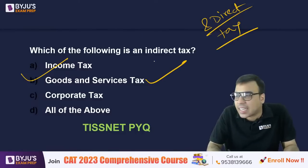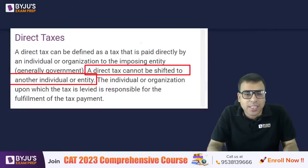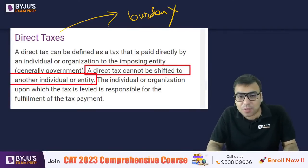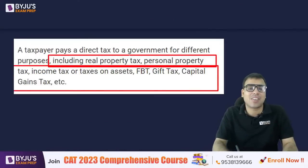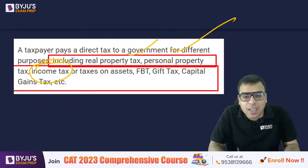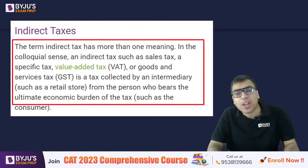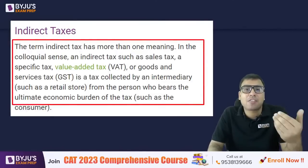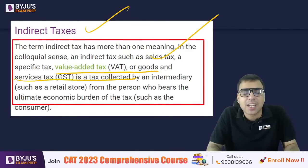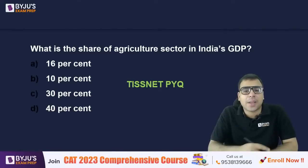Income tax and corporate taxes are direct taxes. Direct tax is the one in which the burden cannot be passed on to others — for example, income tax, property tax, capital gains tax (CGT). Indirect tax means the burden can be transferred to others. For example, when you buy a biscuit, GST is levied from you and the company passes it to the government. VAT and GST are indirect taxes.